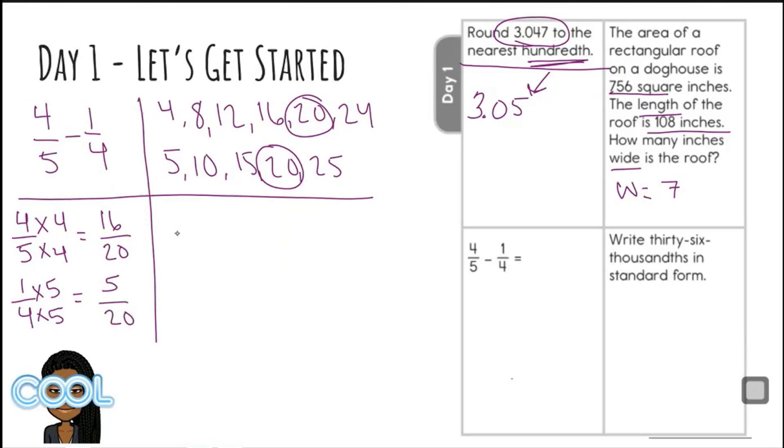So now remember, we were originally subtracting. So let's rewrite it: 16 twentieths minus 5 twentieths. And we can subtract straight across. 16 minus 5 is 11. And the denominator stays the same. And that's it. Very good. Let's keep going.